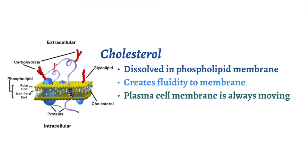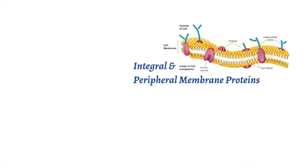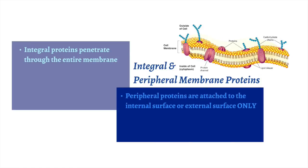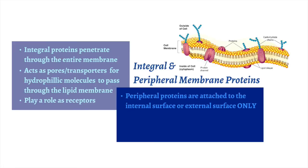In addition to phospholipids, there are other components that play a role. For example, cholesterol dissolves in the plasma membrane and provides fluidity to the membrane. I like to think of the membrane as water in the ocean, as the plasma membrane is constantly moving. Another component of the plasma membrane are proteins. There are two types: integral membrane proteins and peripheral proteins. Integral proteins extend through the entire membrane, while peripheral proteins remain on the intracellular or extracellular surfaces of the lipid bilayer. Integral proteins act as pores or transporters that allow hydrophilic or water-soluble substances to pass through the lipid bilayer, and can also act as receptors. Peripheral proteins act as enzymes that play a role in regulating transport of water-soluble products.